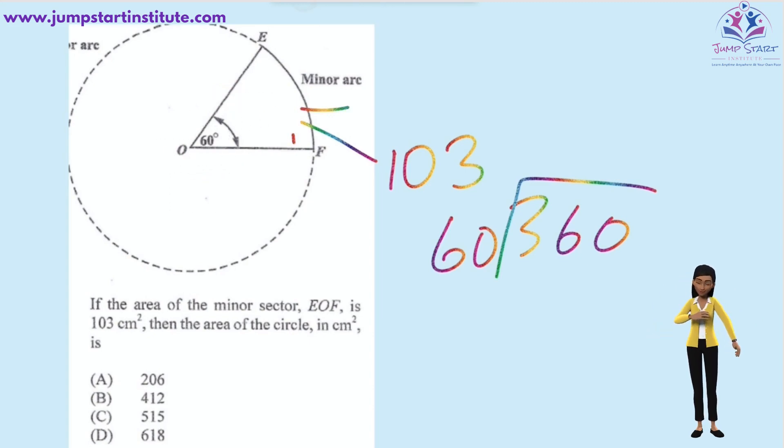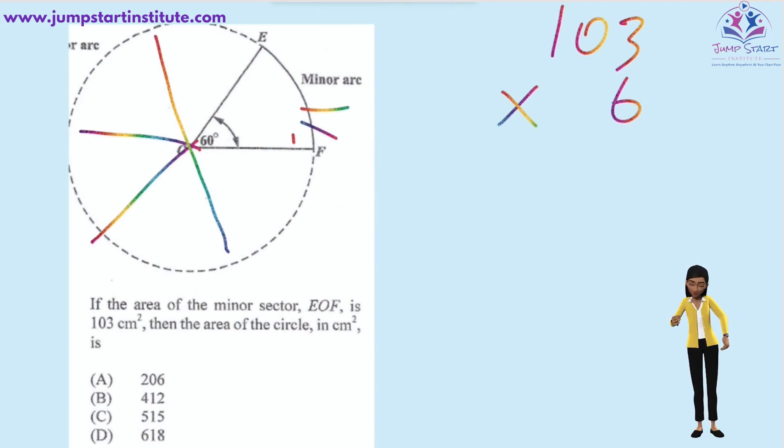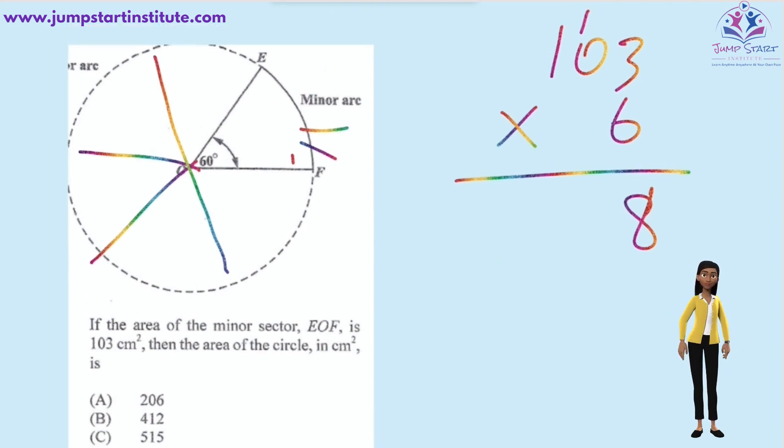So what you need to do is you need to now multiply 103 by 6. Multiplying 103 by 6, we say 6 times 3, that's 18. 6 times 0 is 0 plus 1, that would be 1. And 6 times 1 would be 6. Therefore, the answer is D, 618.